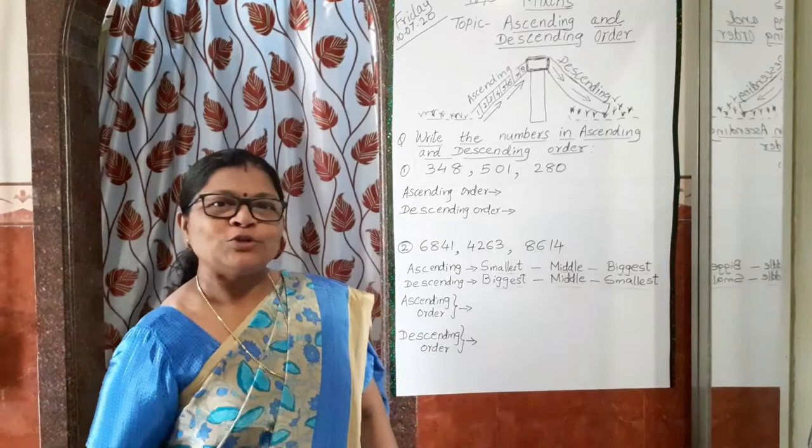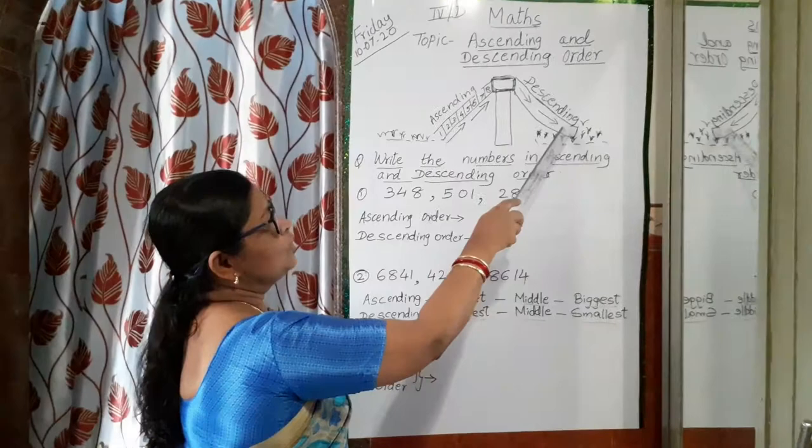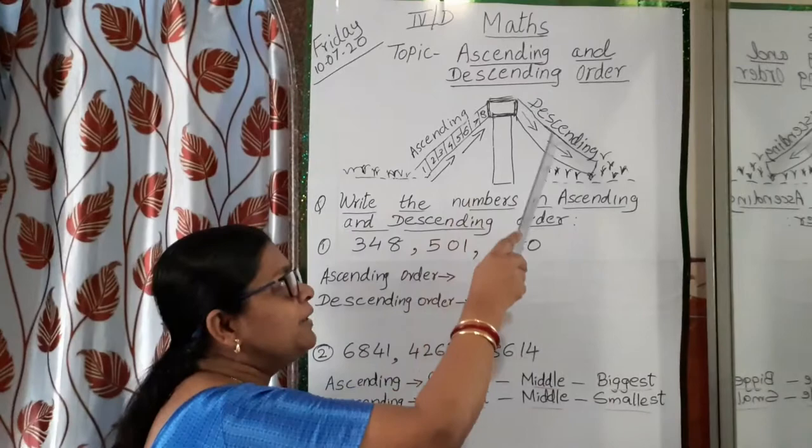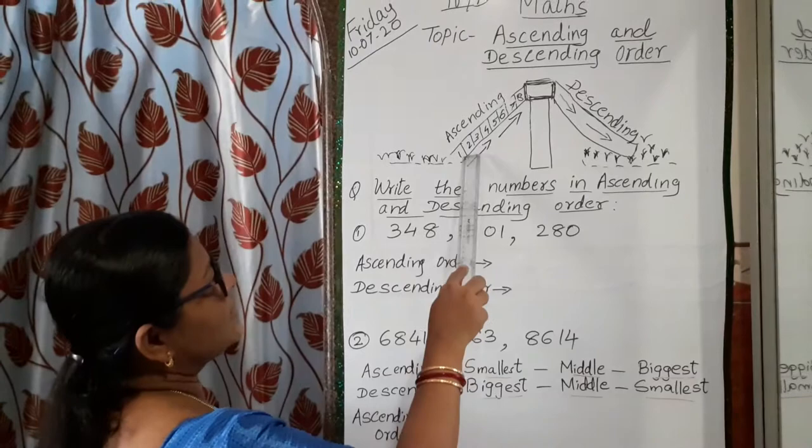Hello students, you all like to play on the slide. So let me take you all to the right. Now see, when you are climbing on the slide, you are moving — you are climbing from down to up, right? And then again you are getting down, that is sliding down. Climbing up is called ascending order, and climbing down is called descending order. So today our topic is ascending and descending order of numbers.